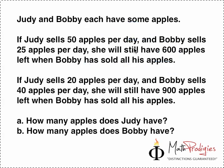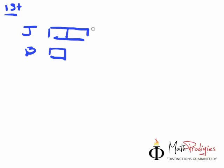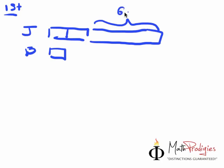You should have something that looks like this. In the first scenario, how much does Judy have? Judy has twice as much and Bobby has once. So that is 2 to 1, good job. And she has exactly 600 apples left.